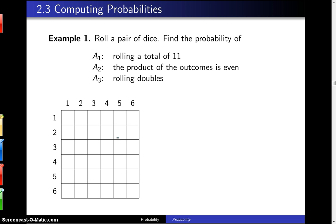and the third event is rolling doubles. Now this can't be answered unless we throw in the fact that these dice are fair.